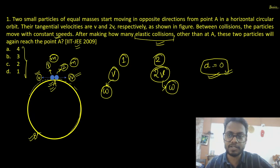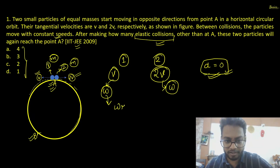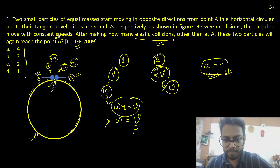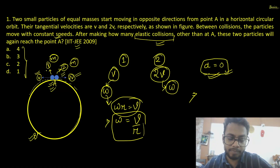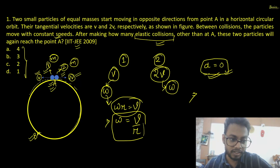Angular velocity omega multiplied by radius r gives velocity, so omega equals velocity upon r. We need to find how much distance — or rather angle theta — each particle travels before the collision at point B. In circular motion, particle 2 travels some distance and particle 1 travels some distance, and both reach point B at the same time.